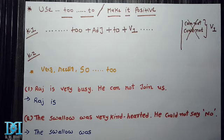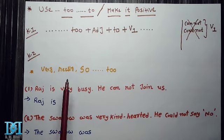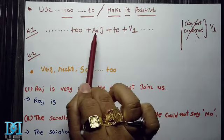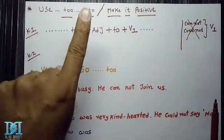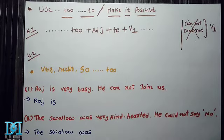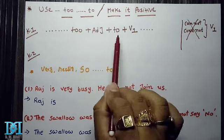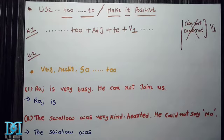So now understand: whenever you want to use 'too...to' in a sentence or want to make the sentence positive, your key will be: first, whatever 'very', 'really', or 'so' is there, replace it with 'too'. After that keep the adjective as it is. Then take 'to' if the subject is one. After 'to' comes V1. Remove 'cannot'/'could not', and whatever V1 is after them, bring it after 'to'. Keep the rest of the sentence as it is. So simple is this.